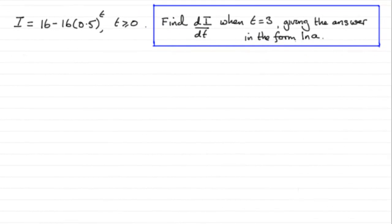Now, for this question, we're given that i equals 16 minus 16 times 0.5 to the power t, where t is greater than or equal to 0.